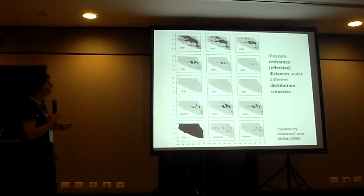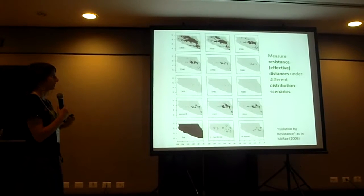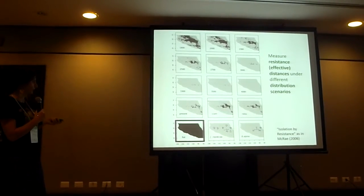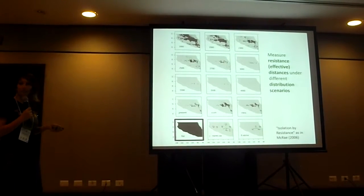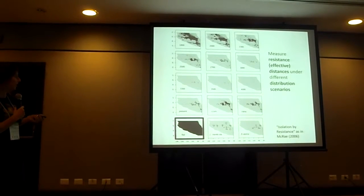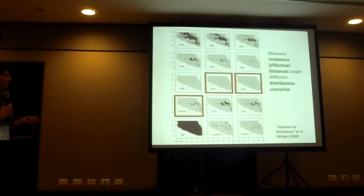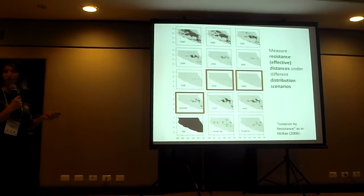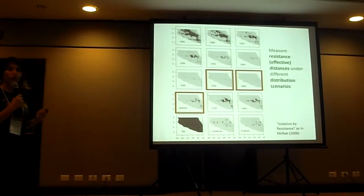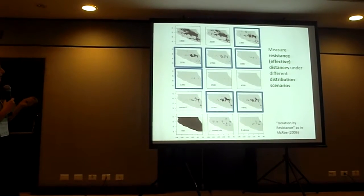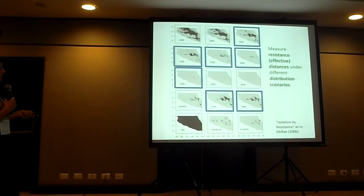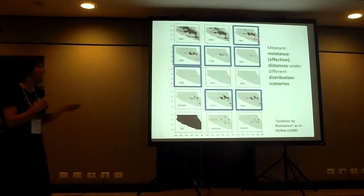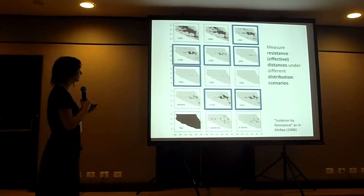We can model this with different resistance surfaces. The control surface is a flat landscape, equivalent to plain distance. We can then use the present distribution of alpine grasslands at the known minimum altitude for each species, and we can also go to the past by creating surfaces from species distribution models at the Last Glacial Maximum, or by dropping the vegetation lines down to these altitudinal surfaces.